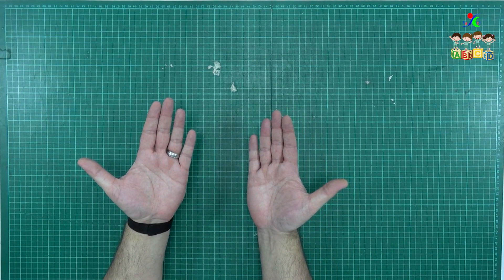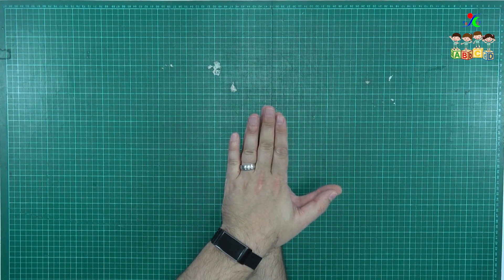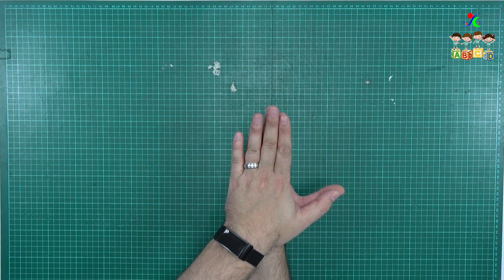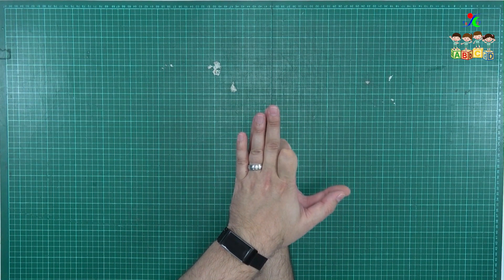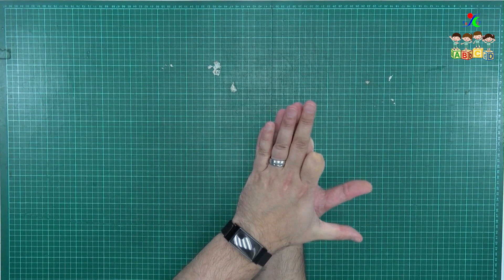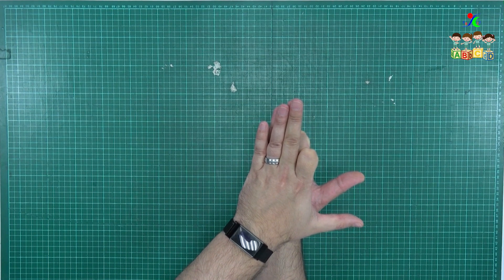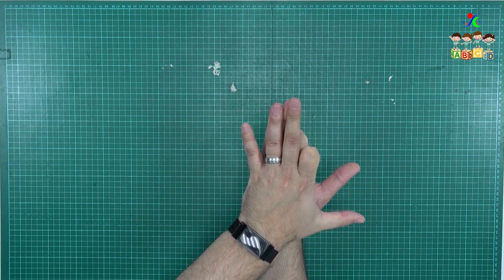To make a shadow dog, first touch palm to palm. Then bend index fingers back. Now split thumbs. Finally move pinky fingers down.